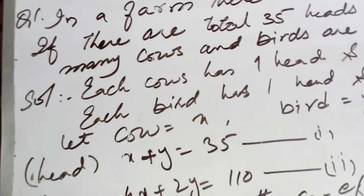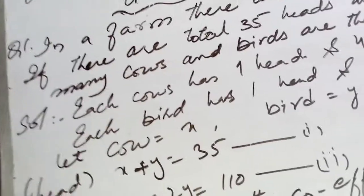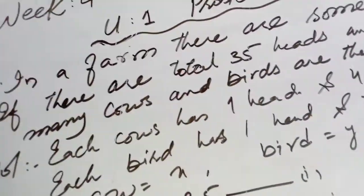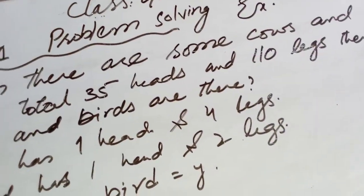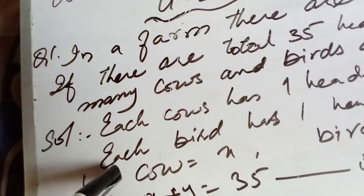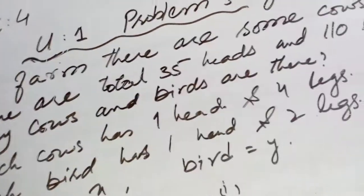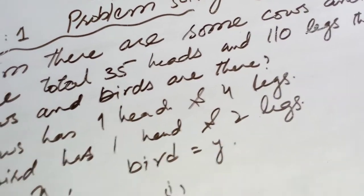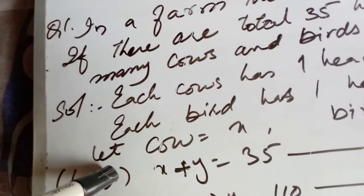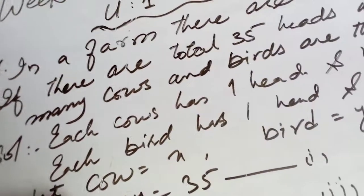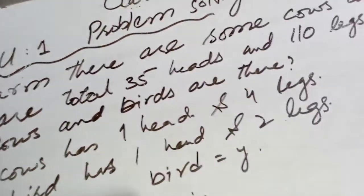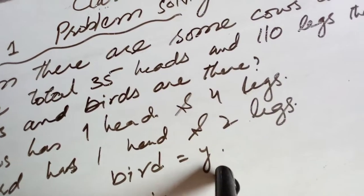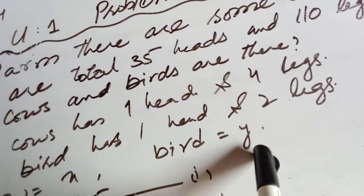Now we will take a solution. Each cow has one head and four legs. Each bird has one head and two legs. Let cow be equal to x and we represent the bird with y.